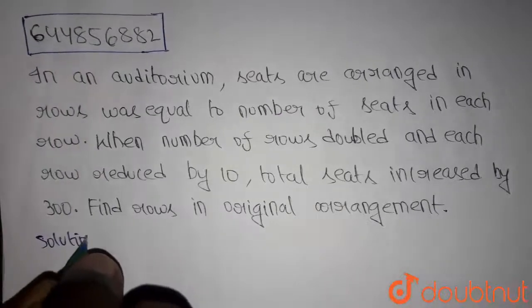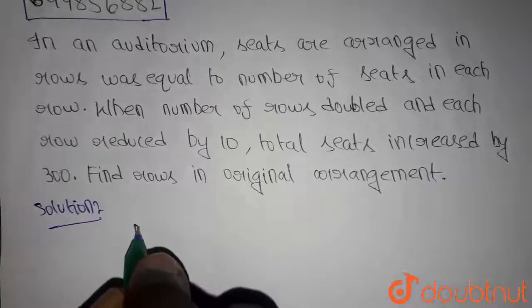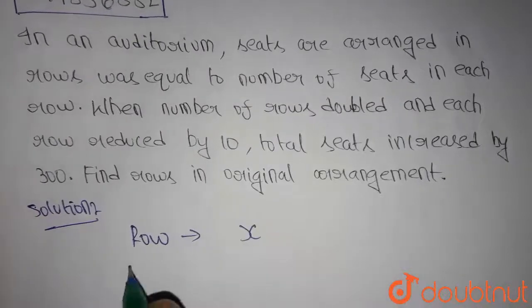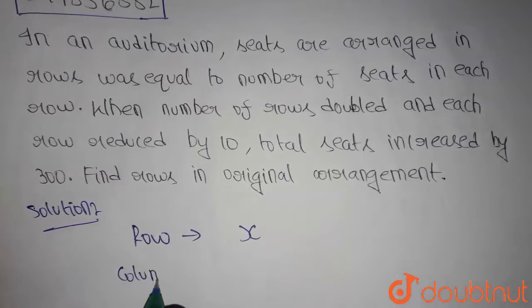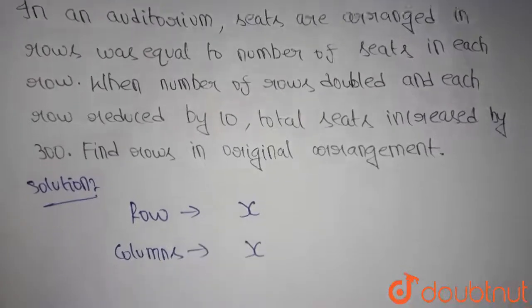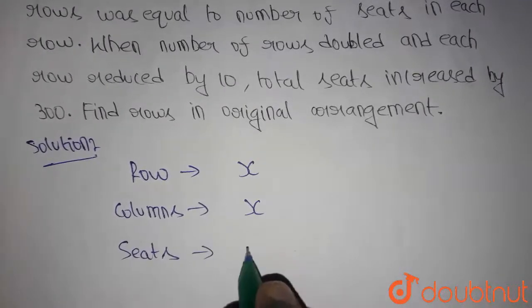Let's get into the solution. Let's say in the original arrangement, the number of rows are x. Similarly, the number of columns, which is nothing but seats in each row, will also become x. Then total seats in the original arrangement will become x square.